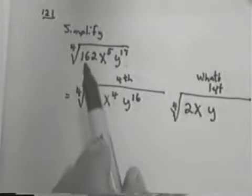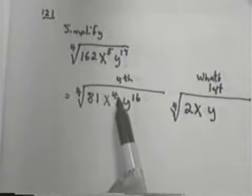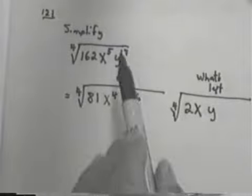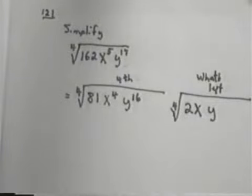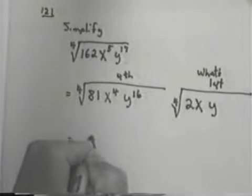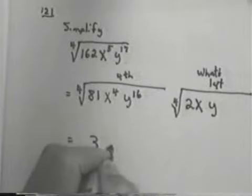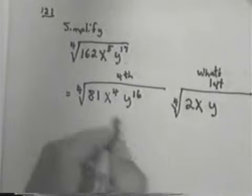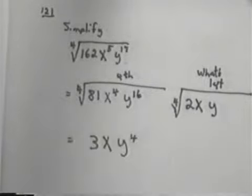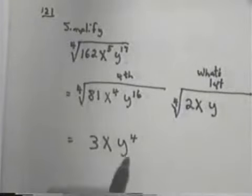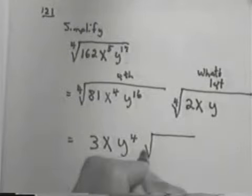Well, 81 times 2 is 162. x to the 4th times x is x to the 5th. y to the 16th times y is y to the 17th. Now, once you get them factored, all you do is simply evaluate the 4th root. The 4th root of 81 is 3. The 4th root of x to the 4th is x. The 4th root of y to the 16th is y to the 4th. 4 goes into 4, 1. 4 goes into 16, 4.